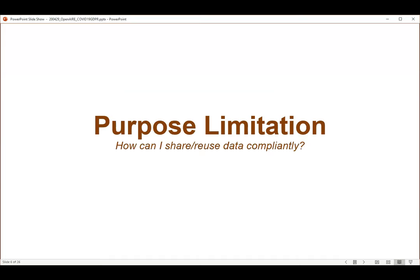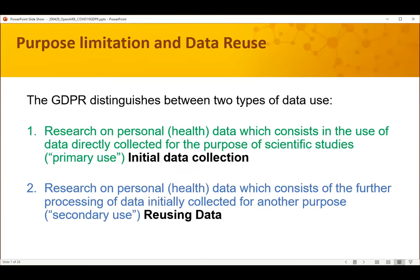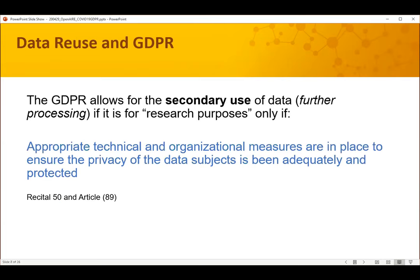We also looked at purpose limitations — Prodromos talked about this in further processing. This is quite important for research. The GDPR distinguishes between two types of data use: the initial data collection use, which is when you use data directly collected for a particular purpose, a scientific study in this case; and then the secondary use, which is when you're reusing data. If you've collected health data for a particular purpose but then want to repurpose it for research, when that secondary use is research, it is actually allowed to do so under the GDPR. So long as the second purpose is research, you can go ahead without requiring extra consent from individuals, as long as you apply the proper technical and organizational measures to protect your data subjects.